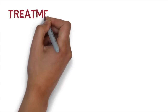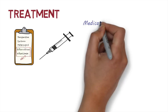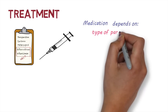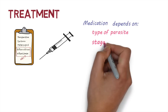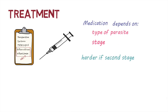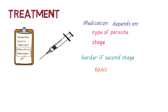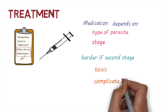There is a limited range of effective medication available to treat the disease. The type of medication used will depend on the type of parasite and the stage of the disease. The disease is harder to treat once it has progressed to the second stage, and the medication used is more toxic and complicated to administer.